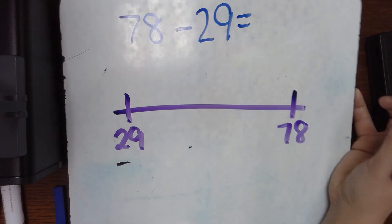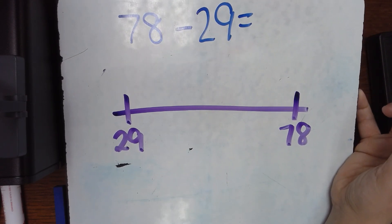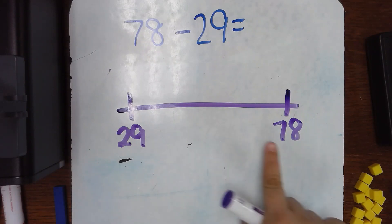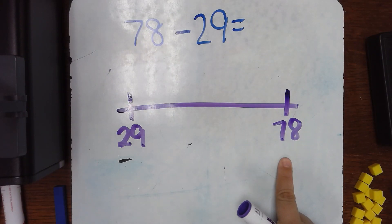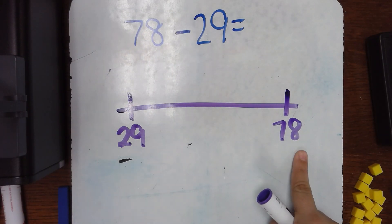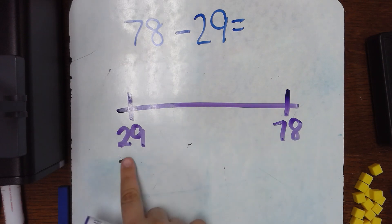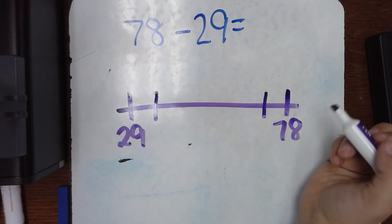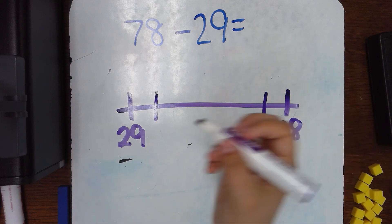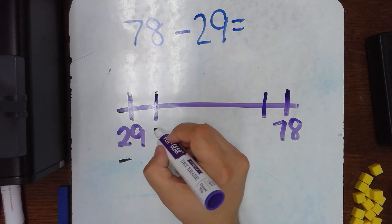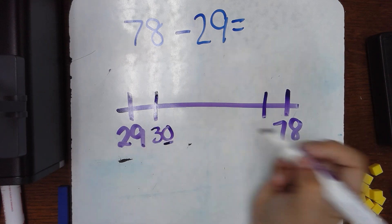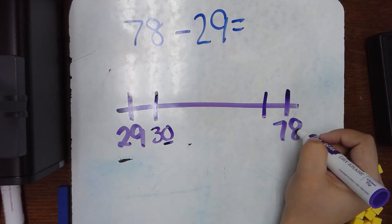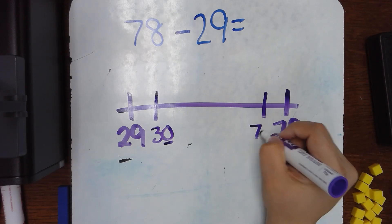Now we want our students to understand that adding from 29 up to 78 is the same as subtracting from 78 down to 29. The distance is still the same. The method you do doesn't matter. Okay. So we start off by writing the tens that are closest to each of these numbers. The ten that's closest to 29 is 30. It ends in zero, so it's a ten number. The ten that's closest to this number is going to be 70.